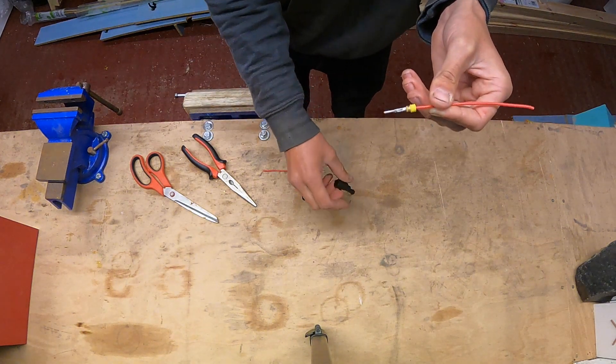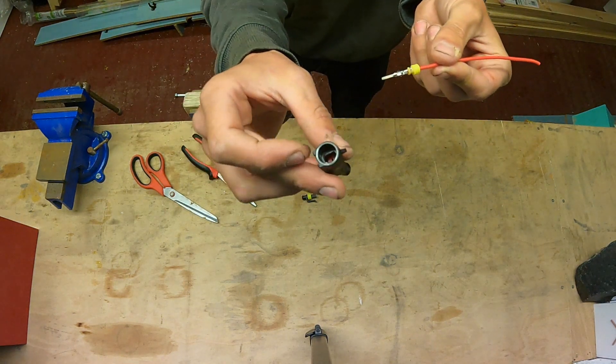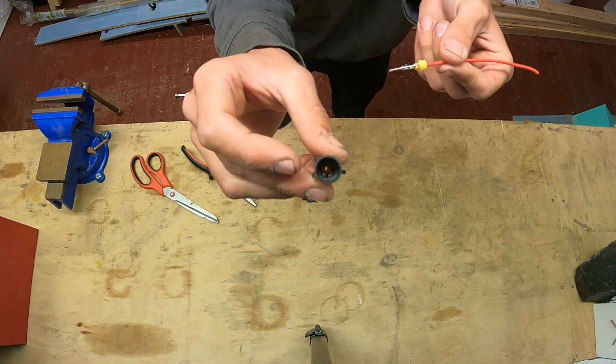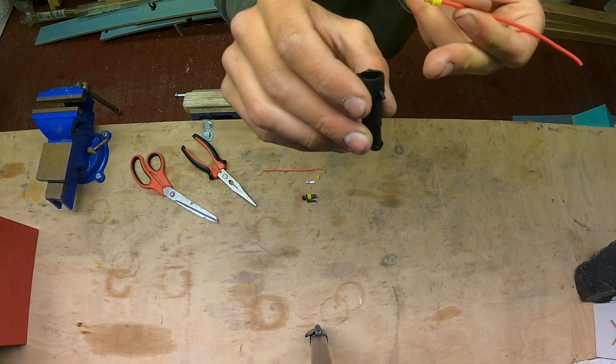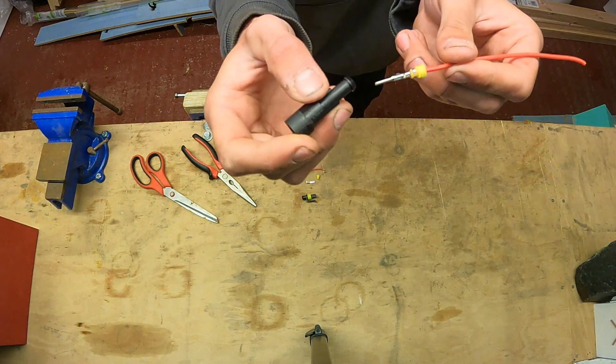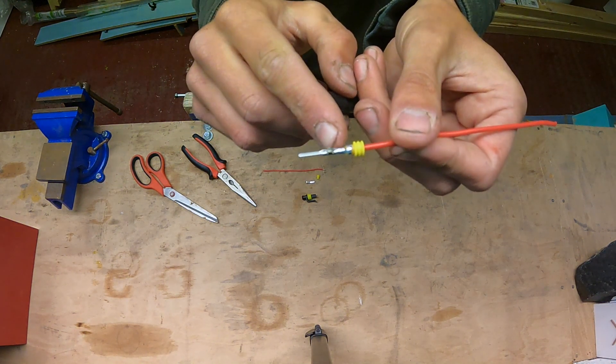We can then take the housing which it'll go into. This male terminal will go into the female connector housing. It will slot in the back and push through until it reaches a position where it clicks into place.